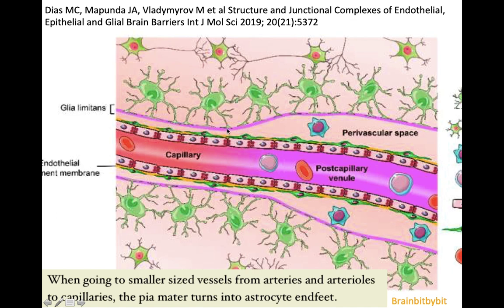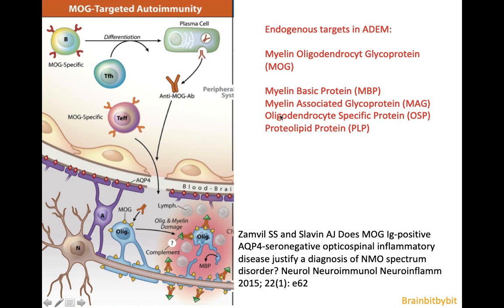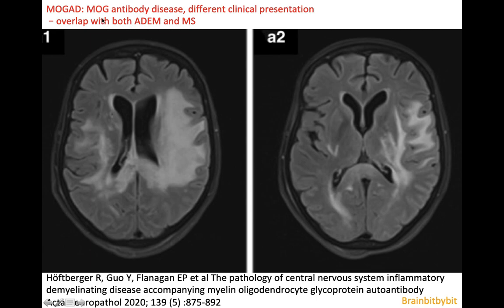In ADEM, the inflammation and demyelination might be because of a cross-reaction with the infectious agent, or it might be that the infection damages and primes the blood-brain barrier. This enables the entering of myelin components into the bloodstream, and then you get a reaction against these endogenous targets. One of them is myelin oligodendrocyte glycoprotein. There are also other agents that might be involved in ADEM, and if you classify the disease based on the target, the microscopy, or the antibody, you might classify it as a MOG antibody disease.